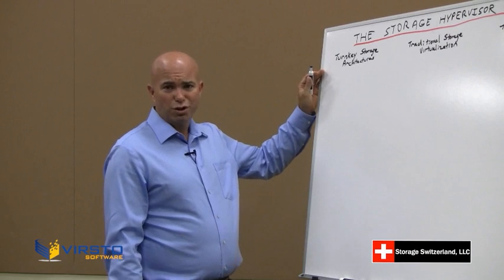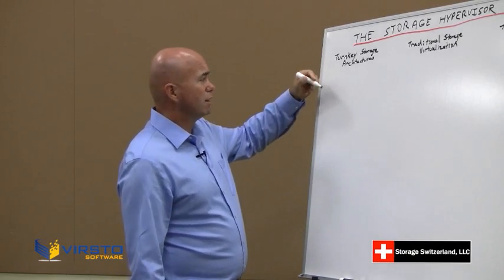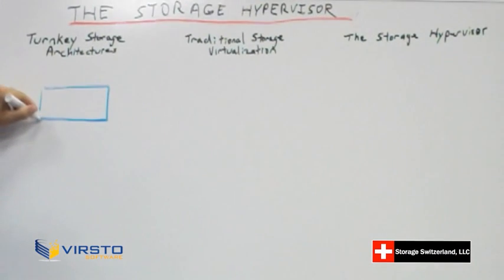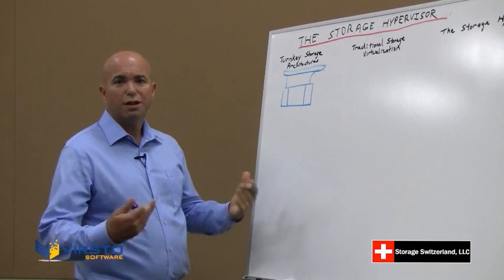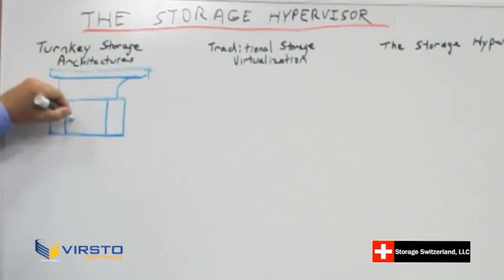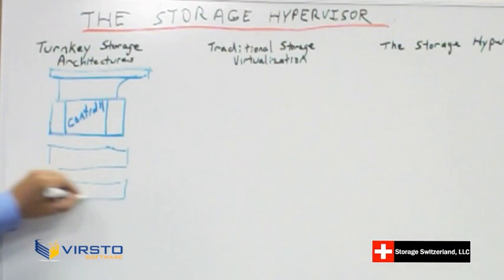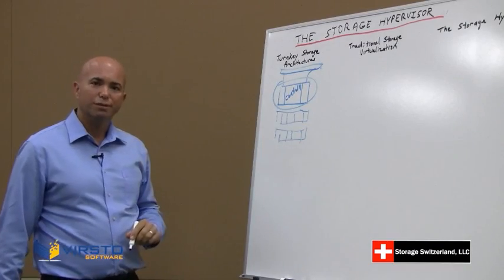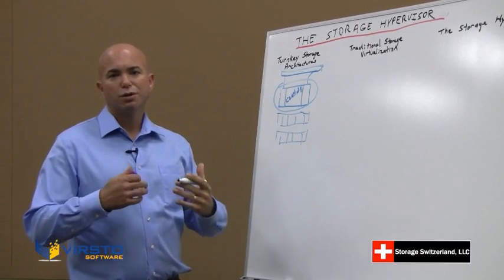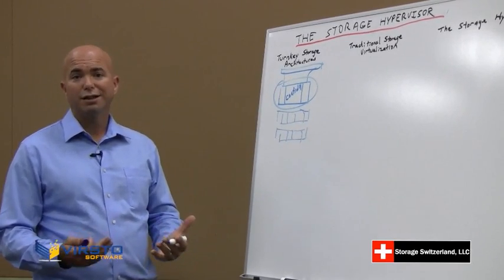If we look at the traditional turnkey storage architecture that has been prevalent in the data center for the last 25 years or so, it's built on a pretty simple architecture. You have a storage compute engine that contains typically two controllers. Those controllers connect to hosts, or more commonly nowadays into a storage switch that the hosts connect into. That controller connects into storage shelves, which is where all our capacity is. But really, the intelligence and all the work is done at the controller. What we're looking for is the ability to provide services and functionality at the controller level, and most vendors have really stepped up and provide a lot of functionality from this controller.